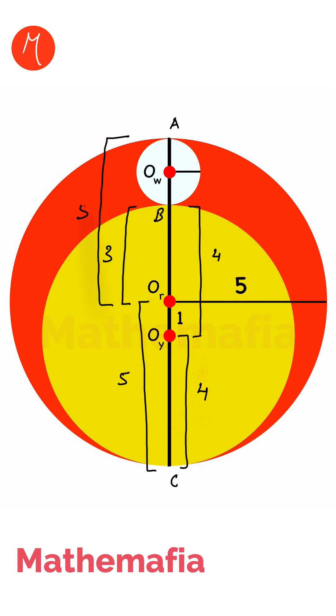If we subtract 3 from 5, we will get the diameter of the white circle, and its value will be 2. If the diameter is 2, that means the radius is 1, and that is the answer.